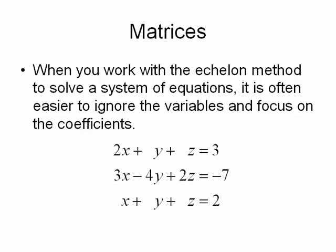Let's take a look at this system: 2x plus y plus z equals 3, 3x minus 4y plus 2z equals negative 7, and x plus y plus z equals 2.